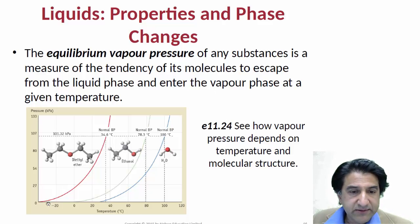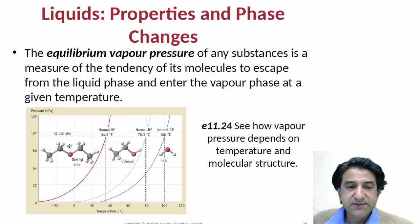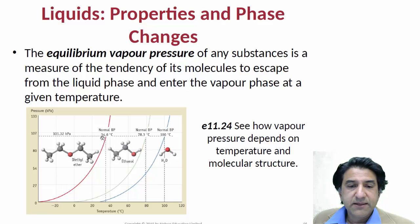Let's return to this slide on equilibrium vapor pressure. We have a graph here of three different molecules: diethyl ether, ethanol, and H₂O, moving from left to right. We have pressure on the vertical axis and temperature on the horizontal axis. These are plots of the equilibrium vapor pressure. We say that the substance boils when the equilibrium vapor pressure reaches the normal atmospheric pressure. Diethyl ether has the weakest forces among these three molecules, and as a result it boils at the lowest temperature, 34.6 degrees. The equilibrium vapor pressure rises until it reaches one atmosphere of pressure, at which point bubbles can form in the liquid — at 34.6 degrees C — and that is when that substance will boil if the applied pressure is one atmosphere.